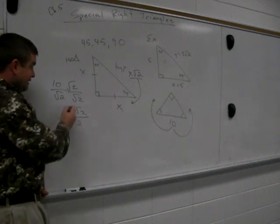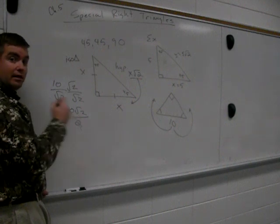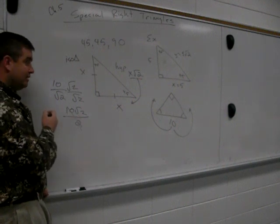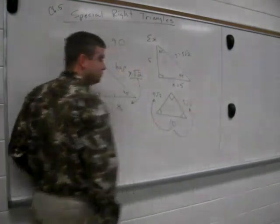I rationalize the denominator by multiplying by root 2 over root 2. I get 10 root 2 all over 2. Can I cancel? 10 and 2, I better cancel, right? Because both of them are what? Outside the radical. And so my legs are what? Very good. 5 root 2 and 5 root 2.